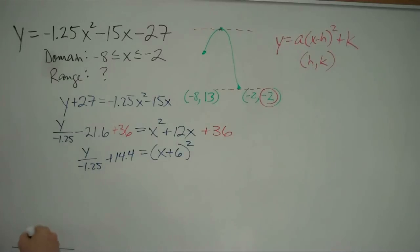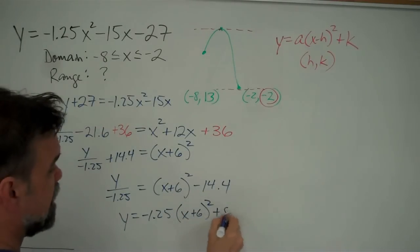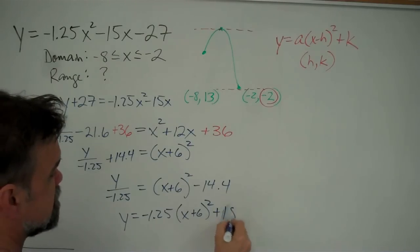Now, it's very simple. You just solve for y. We're going to do that by subtracting the 14.4 and then multiplying by negative 1.25 on both sides. So I get y over negative 1.25 equals x plus 6 squared minus 14.4, subtracting 14.4 from either side. And then once I multiply, I get y equals negative 1.25 times x plus 6 squared. Negative 1.25 times negative 14.4 gets me 18.